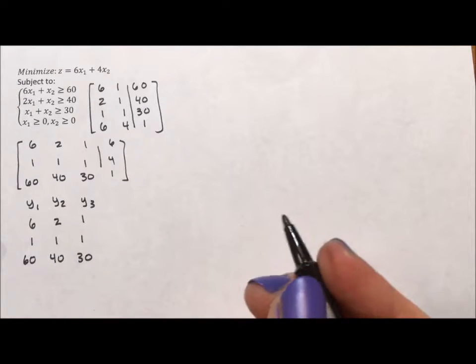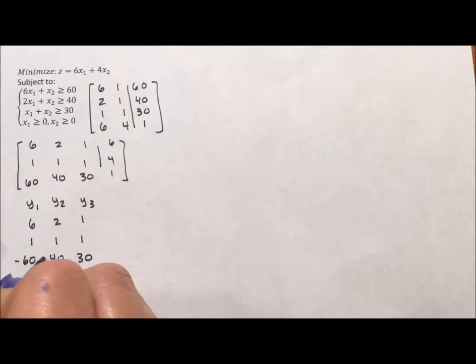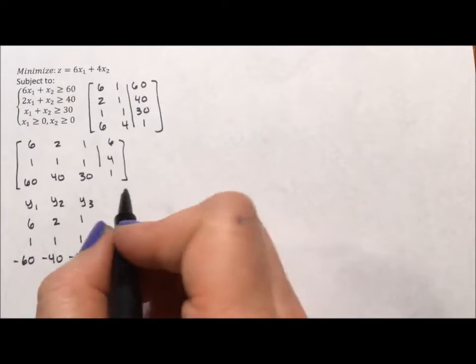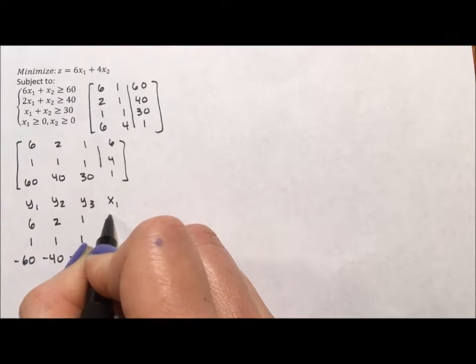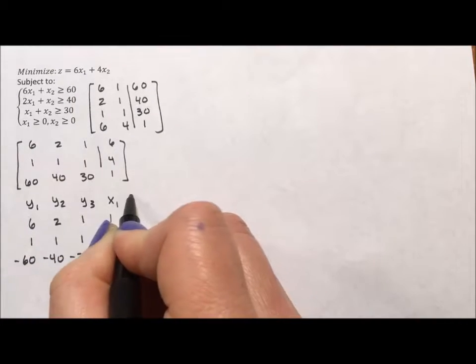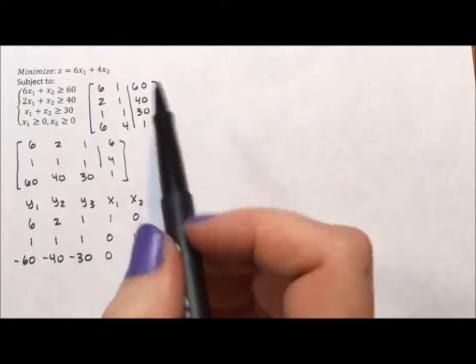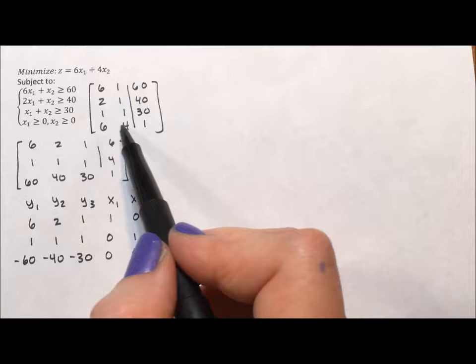Because we're doing an optimization, we're actually going to make all the numbers below the line negative. Okay, instead of slack variables, we're going to do x variables. x sub 1 is 1, 0, 0. x sub 2 is 0, 1, 0.